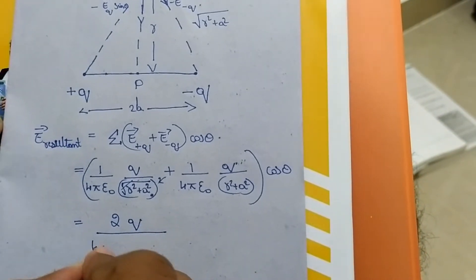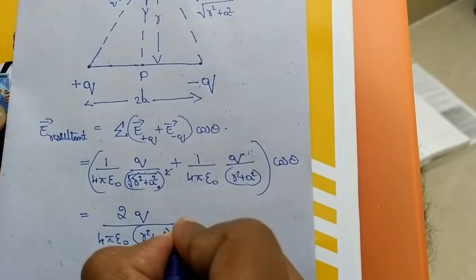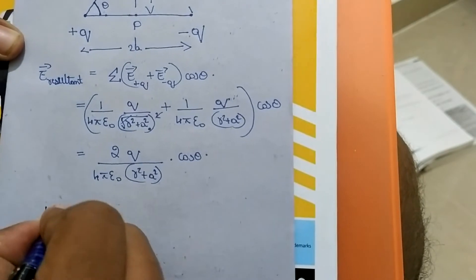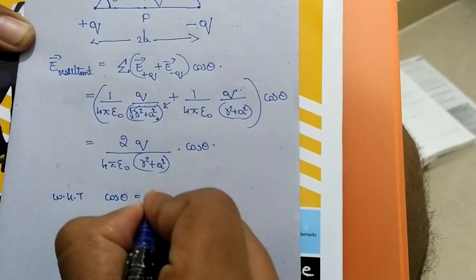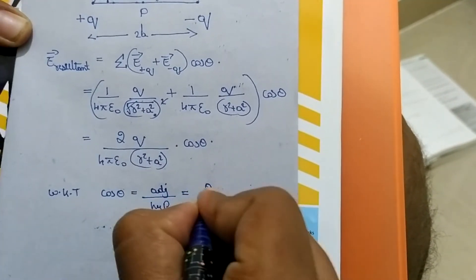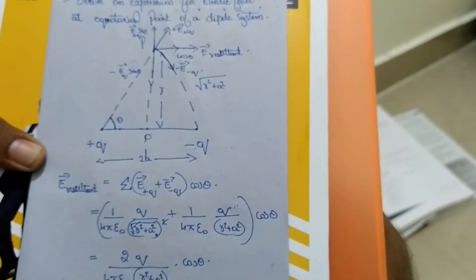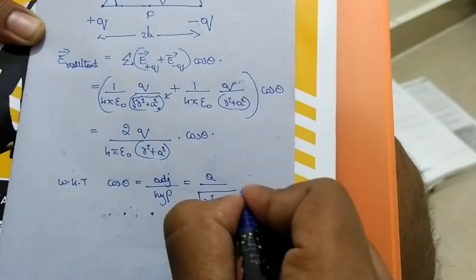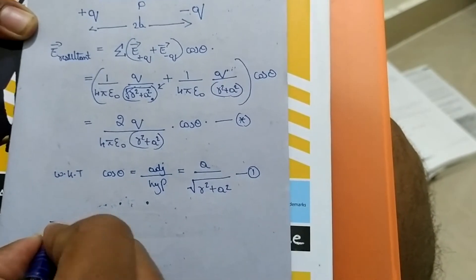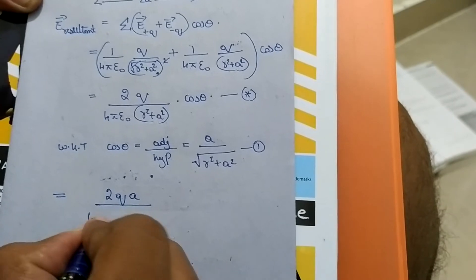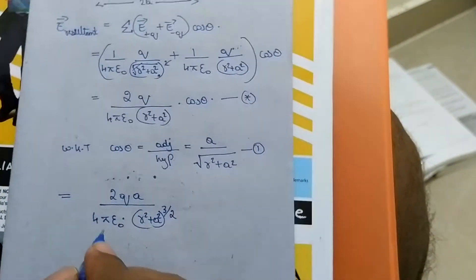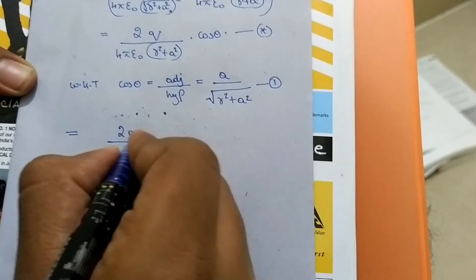So E resultant equals 2Q divided by four pi epsilon naught times (r squared plus a squared) times cosine theta. Here theta is the angle between the line joining point P to the charge and the dipole axis. From the figure, cosine theta equals adjacent over hypotenuse, which is a divided by the square root of r squared plus a squared. Substituting this, we get 2Qa divided by four pi epsilon naught times (r squared plus a squared) raised to the power 3 over 2.